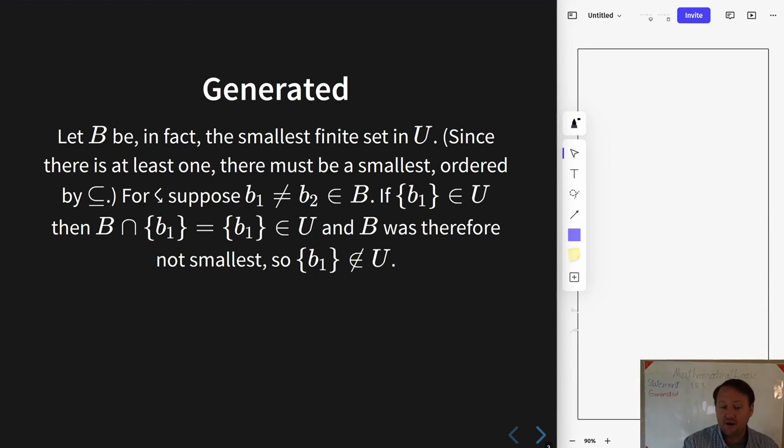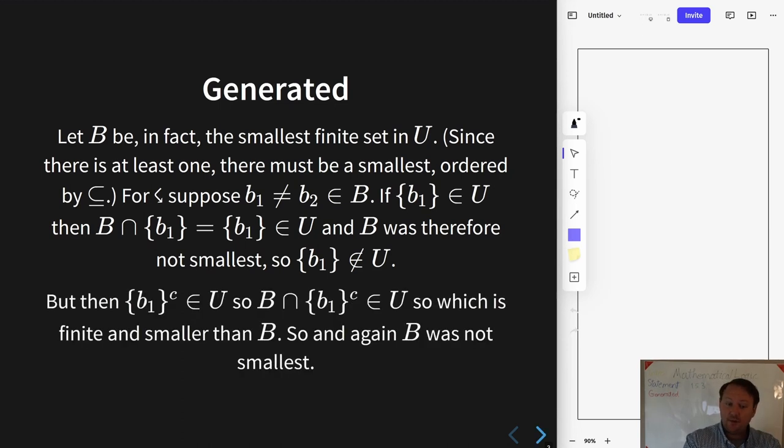So the singleton b₁ is not in U. But then because U is an ultrafilter, its complement must be in. Now then again, do closure under intersections and whatever that gets you, it must be a set, a finite set smaller than B was because we've sliced b₁ out now.